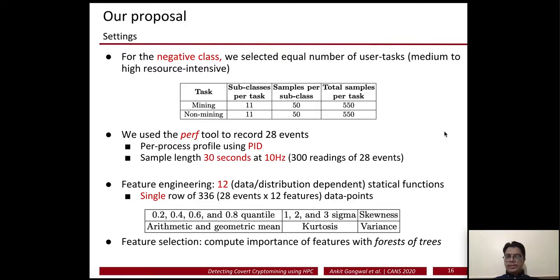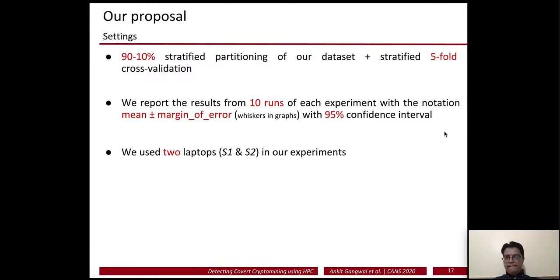To select features we used feature importance from a forest of trees. For the split, we used 90/10 stratified partitioning of our dataset along with stratified 5-fold cross-validation in each experiment, reporting results for 10 runs. The notation used is mean ± margin of error with 95% confidence intervals, shown via whiskers in the graphs. We used two different laptops, S1 and S2, to validate our results.